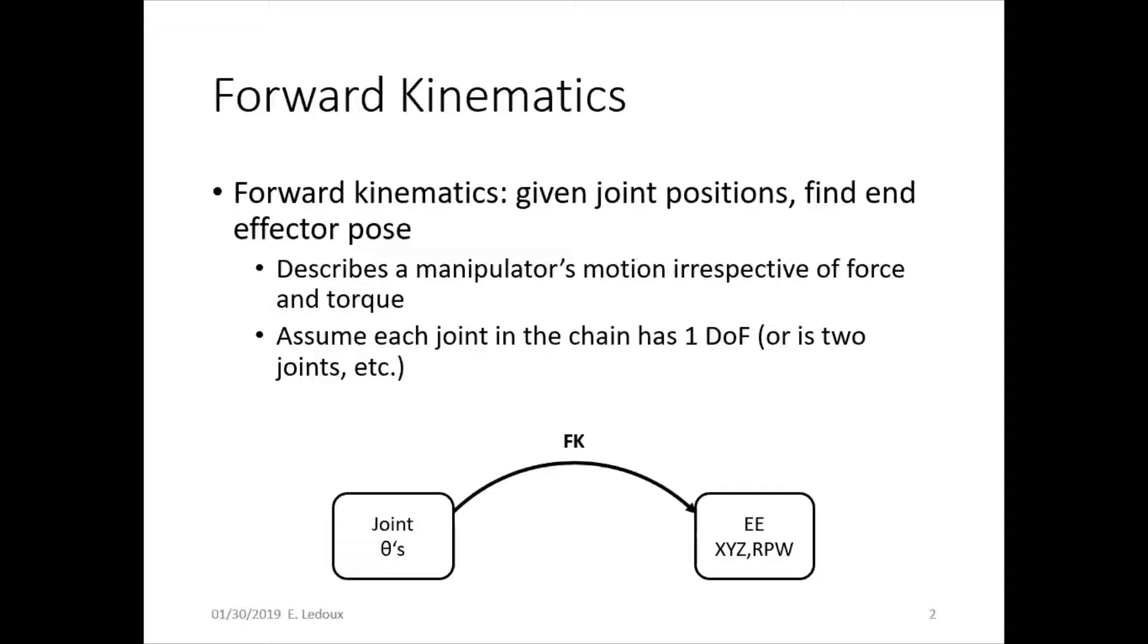For example, a motor will rotate around one axis, a cylinder will move in and out. So if you have something like a ball and socket joint, you would need to make that actually be multiple joints for the math to work out easily.